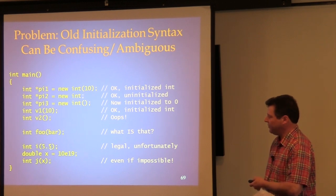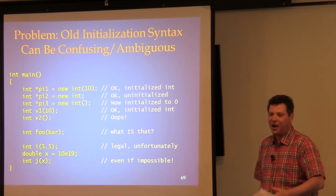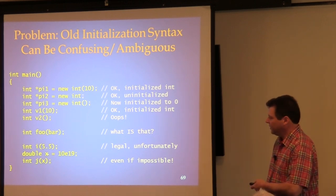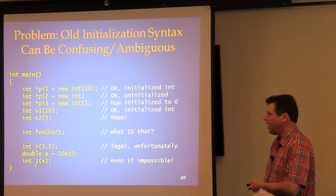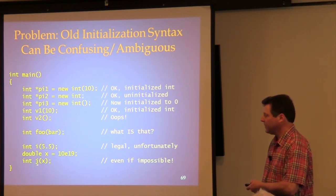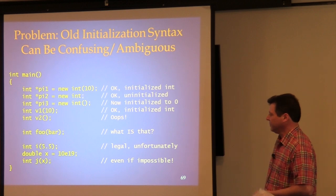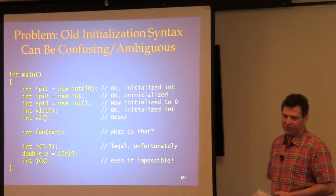Initializing an int to 5.5 — sure, no problem, it just truncates. Initializing a double to a very large number and using it to initialize an int — no problem, just undefined behavior. These are all problems in old C++.